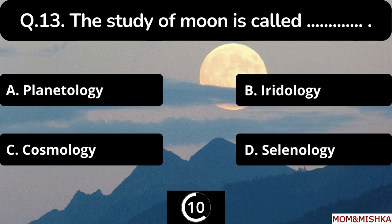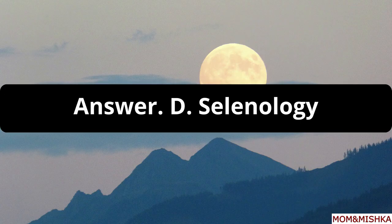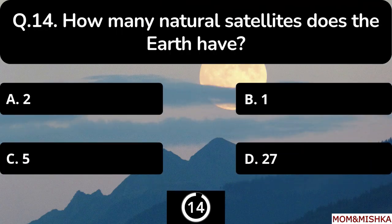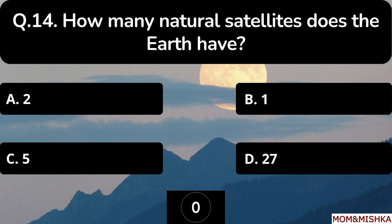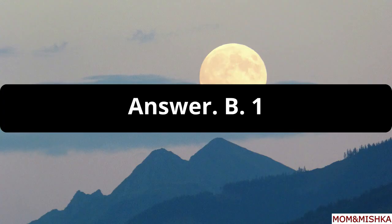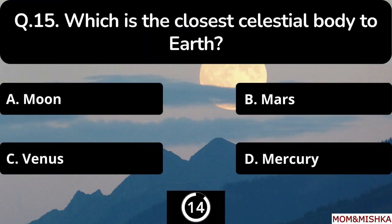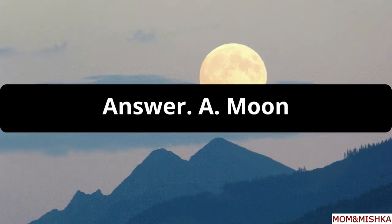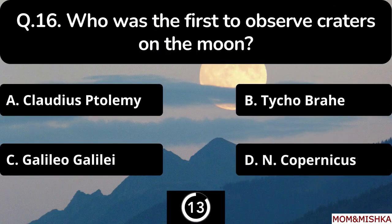The study of the moon is called blank — the answer is option D: Selenology. How many natural satellites does the Earth have? It's only one satellite, that's option B. Which is the closest celestial body to Earth? The answer is option A: Moon.